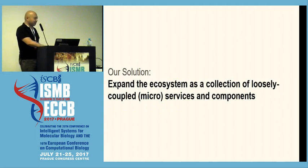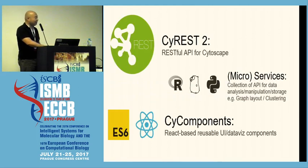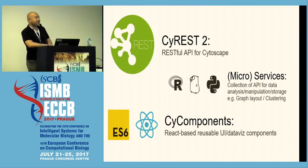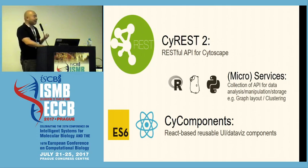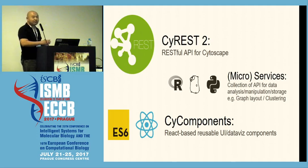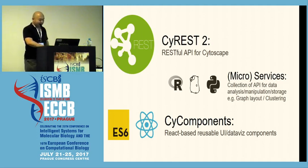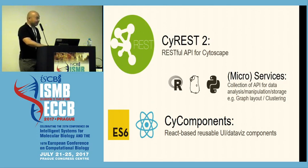Here is our approach. We are trying to expand the ecosystem as a collection of loosely coupled services and components. First, we added a component called CyREST, which is a RESTful API module for Cytoscape. This means virtually all Cytoscape functions are now accessible through a RESTful API — it's no longer just a desktop application. The second component is a collection of small functions like graph layout, heat diffusion service for finding local structure in the network, and clustering — and this is language independent. The last component is actual UI and database components called CyComponents, which are technically pure React components.